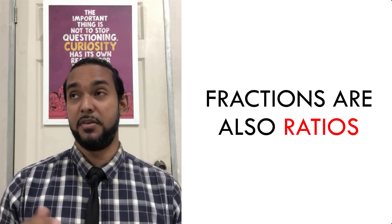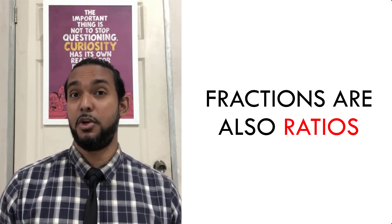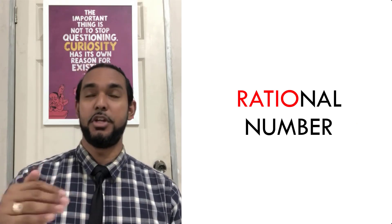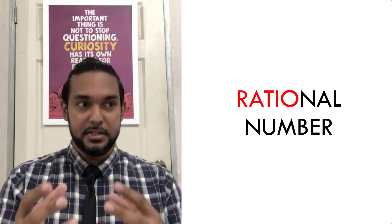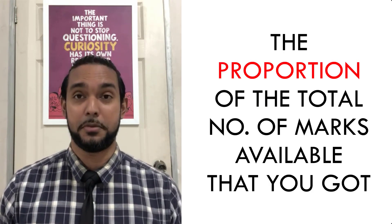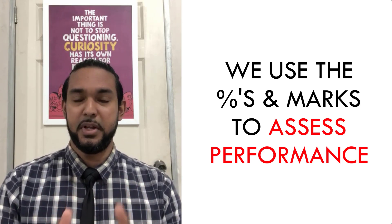Out of every hundred marks available, how much did you get? The greater the percentage, the more marks out of every hundred and the better your performance. Or you may have gotten a fraction — twenty-five out of thirty, forty-five out of fifty — that's still a ratio. It comes from the mathematical concept of a rational number: the ratio of one number to the denominator, telling you the proportion of total marks you got.